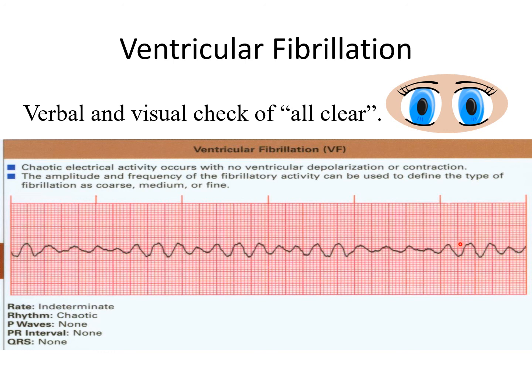Before defibrillating, we must perform a verbal and visual check to make sure nobody is touching the patient, bed rail, or stretcher. We do a visual scan of everyone in the room and announce 'all clear'—everyone responds 'clear.' Only then do we proceed with the shock to stop V-fib.